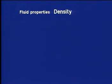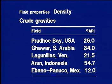Gas and oil densities are normally expressed as specific gravities or API gravity. Some examples of crude oil API gravities are shown here. Note that the range of values is quite wide, from heavy crudes with values close to that of water, to light crudes with gravities in the 50s.